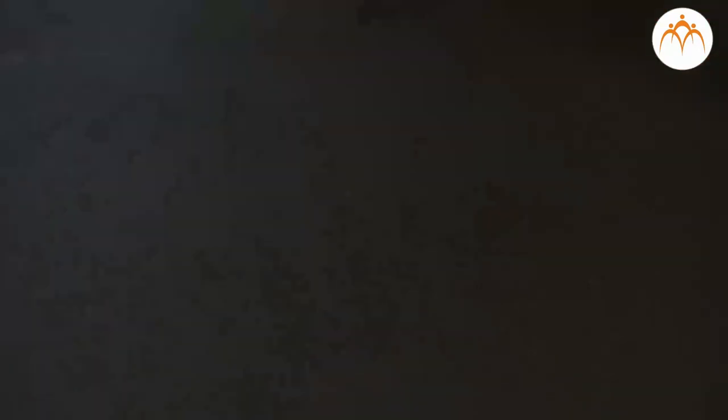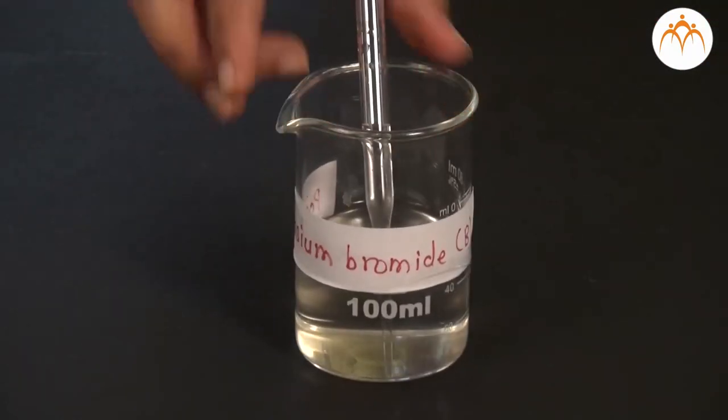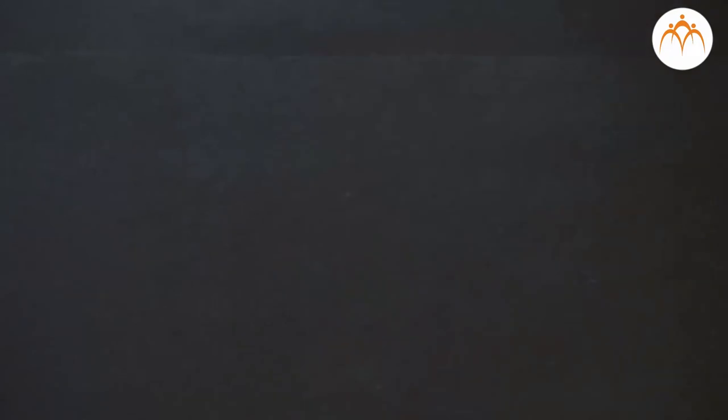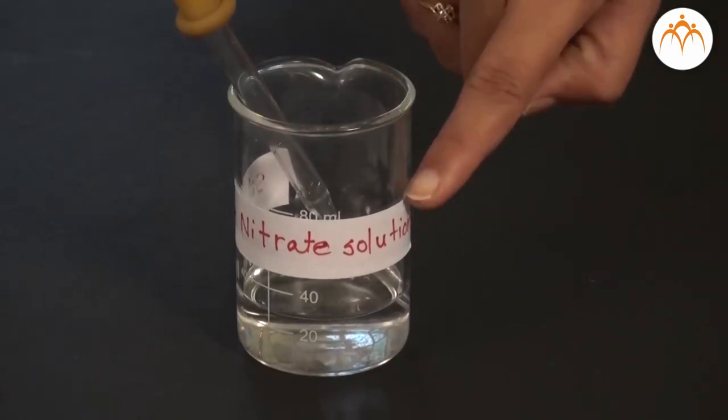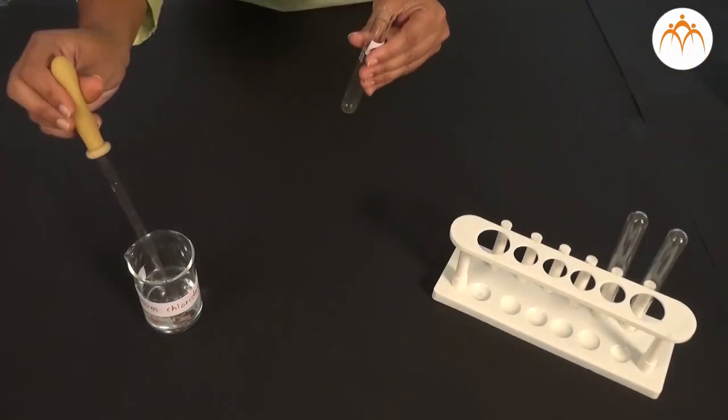Procedure: We keep solutions of potassium chloride, potassium bromide and potassium iodide in three test tubes and label them as A, B and C. Now we want to find out what they really contain.